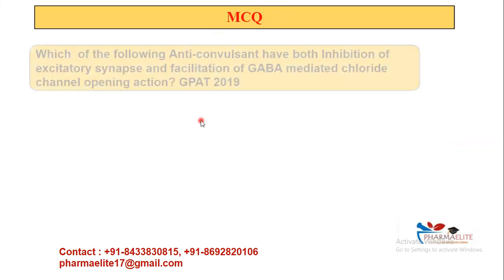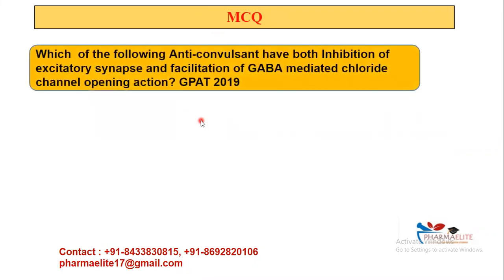This is a past MCQ: Which of the following anticonvulsants has both inhibition of excitatory synapse and facilitation of GABA-mediated chloride channel opening action? There are two mechanisms specified — inhibiting excitatory synapse (glutamate inhibition) and facilitating GABA.